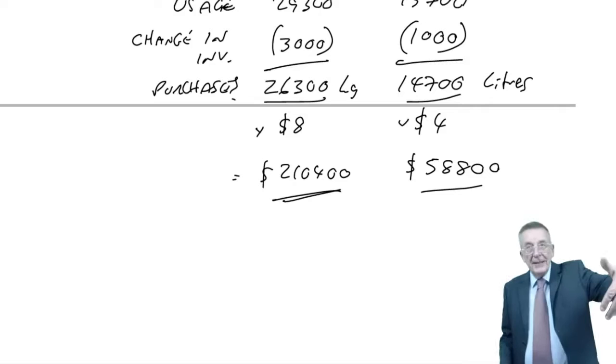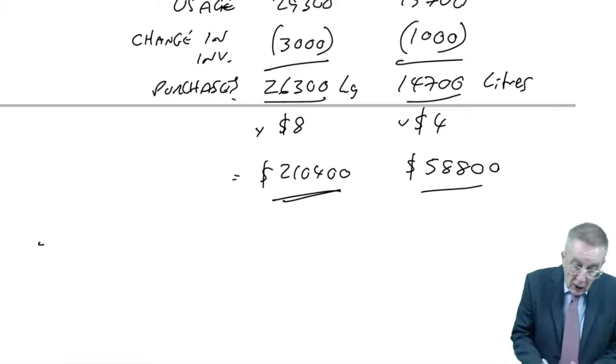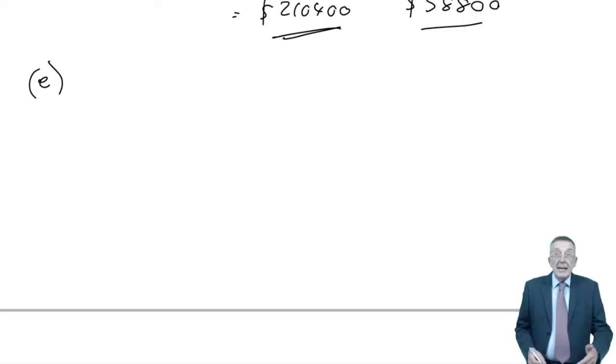See how each budget is leading to another budget? You couldn't have done that one until you'd had your sales budget, gone from there to the production budget, gone from there to the usage budget. We all need doing it in order in real life. All right, last of all, labour budget.